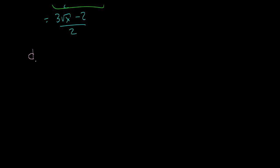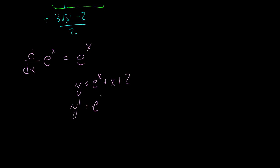The derivative with respect to x of e to the x is equal to itself — e to the x. There are elaborate proofs online; I'm not going to show it here, as it's not that critical for a Calculus 1 course. So if we have y equal to e to the x plus x plus 2, then y prime equals e to the x plus 1: the derivative of e^x is e^x, the derivative of x is 1, and the derivative of any constant is 0. These are your most simple derivative rules.